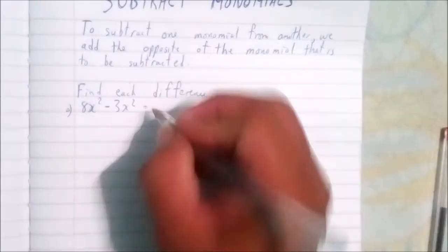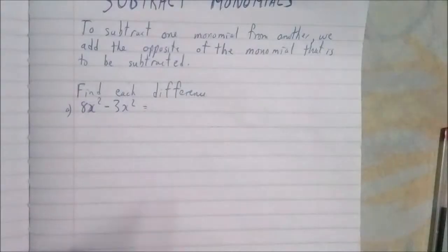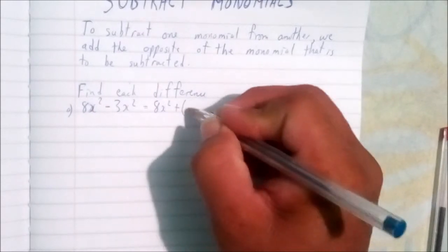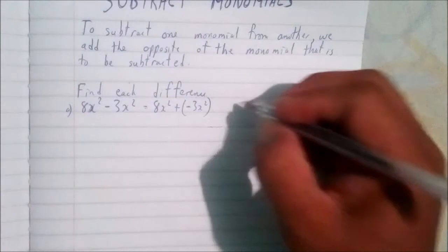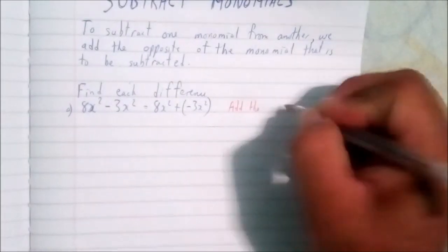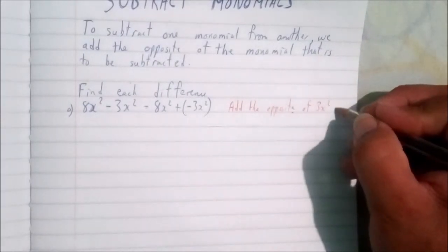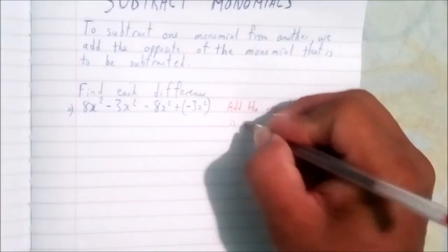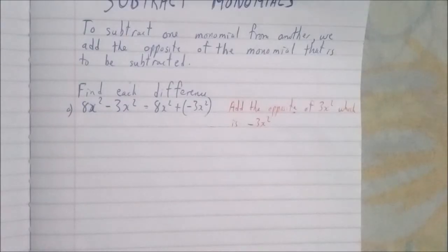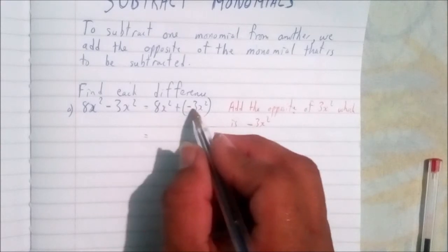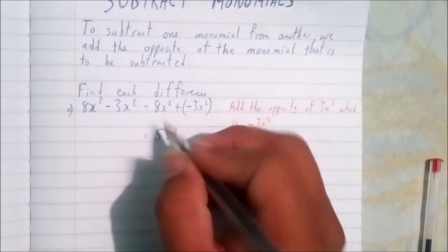Our first step: we rewrite it as 8x² plus negative 3x². What we are doing here is adding the opposite — the opposite of 3x² is negative 3x². So we take 8x² plus negative 3x², which gives us 5x².